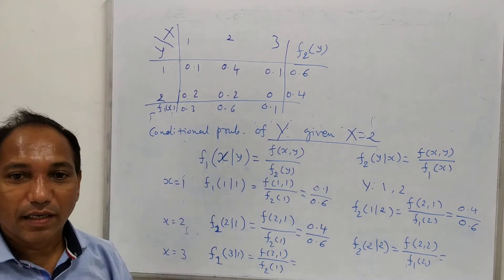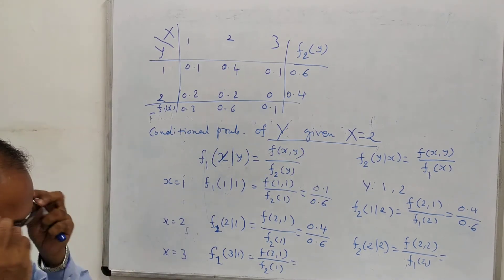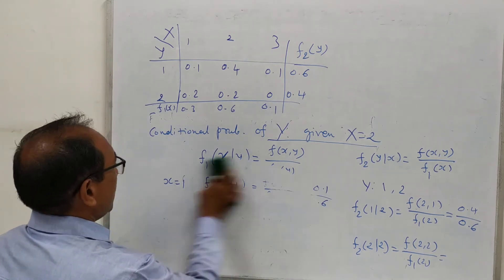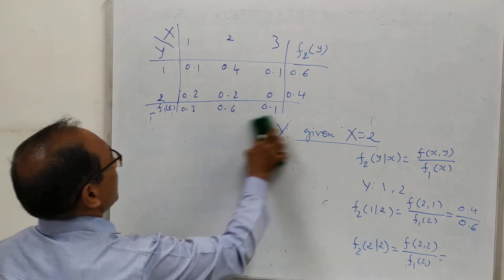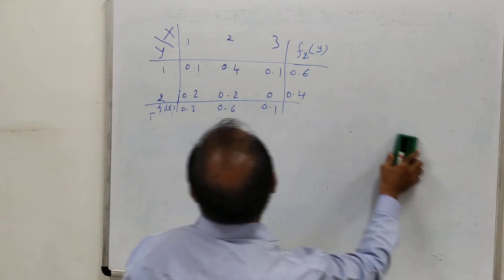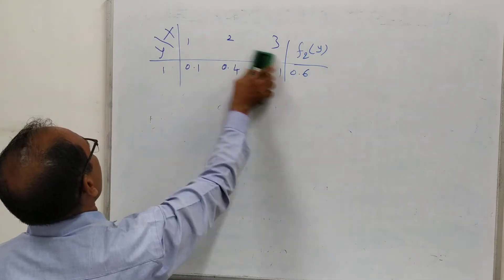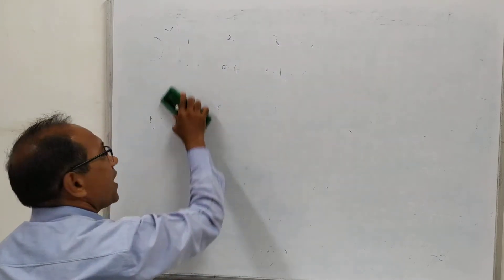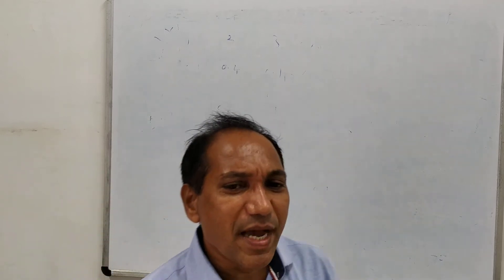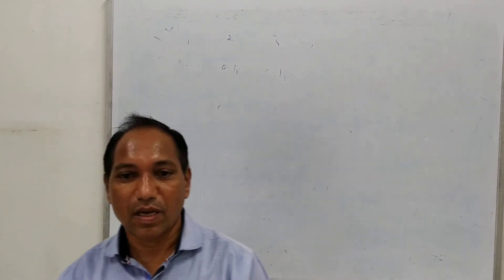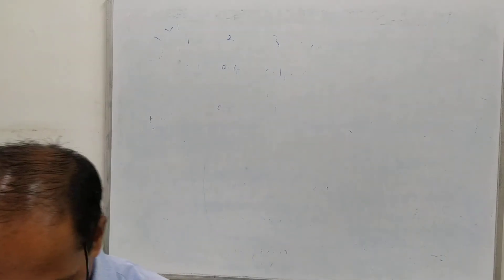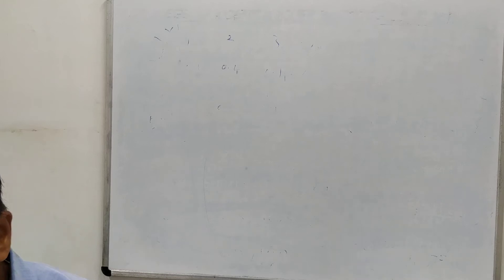So marginal probabilities can be found for X and Y, and conditional probabilities can also be found very easily using these formulas. Once we are given this kind of joint probability table, our problem becomes very simple. Sometimes you may be asked to find the conditional probability for just one particular value of x, in which case you only need to compute that specific value.